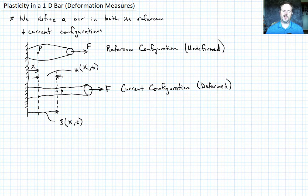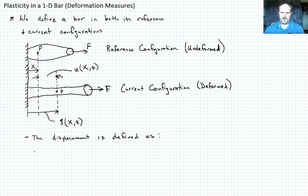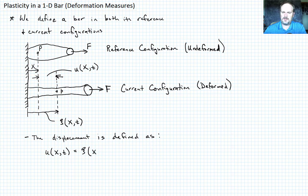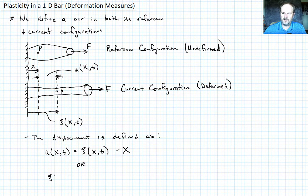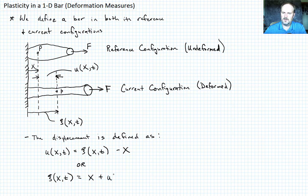That's the configuration we're looking at as we deform a bar. The displacement is defined as: U of X and T equals C of X and T minus X, where X is just the reference state with no time dependence. Or equivalently, we can write the current configuration as C equals X plus U of X and T.